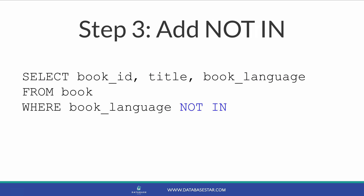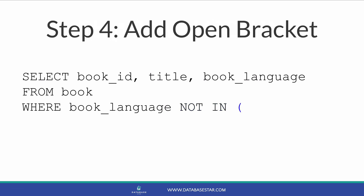The next step is to add the NOT IN keyword. This is written as two separate words — NOT and IN — with a space in between. This query will look for books where the language is NOT IN something. We need to specify the rest of the query. Step 4 is to add an open bracket, since we specify the values to be excluded inside the brackets.